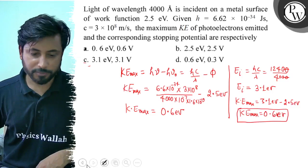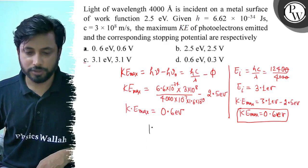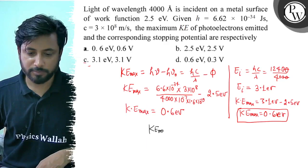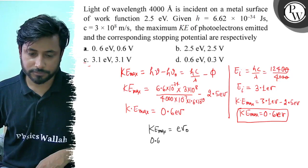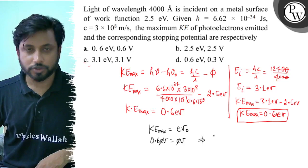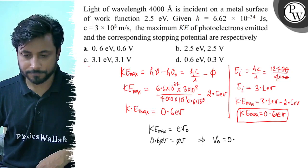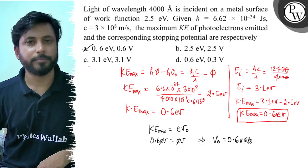Now we can find the stopping potential. KEmax equals eV₀, so V₀ equals KEmax divided by e. KEmax value is 0.6 electron volts. The e cancels, so stopping potential is 0.6 volts. So the final answer is option A. Best of luck.